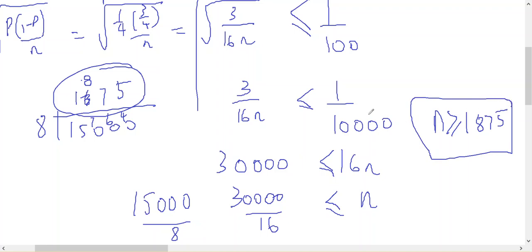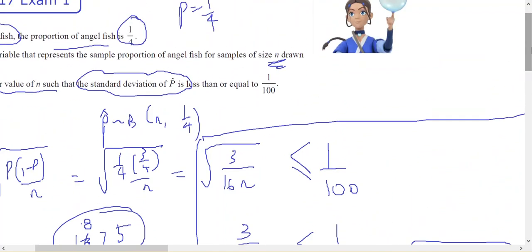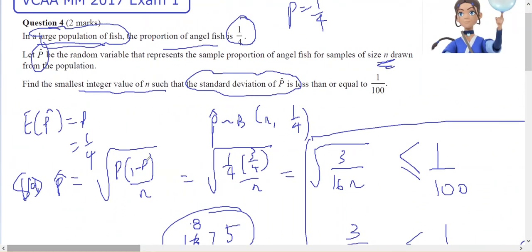For the standard deviation to be less than or equal to one over one hundred, n equals 1,875. This particular question required using the rules about standard deviation of p-hat and the fact that I was given the constraint.